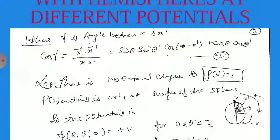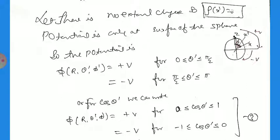The potential is only on the surface of the sphere. The boundary condition is: φ(R, θ', φ') = +V for θ' between 0 and π/2 (upper hemisphere), and φ(R, θ', φ') = −V for θ' between π/2 and π (lower hemisphere). Changing variables to cos θ', the limits become: +V for cos θ' ∈ [0, 1] and −V for cos θ' ∈ [−1, 0].